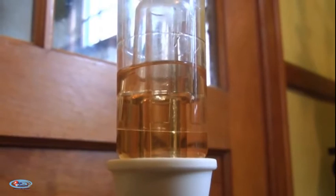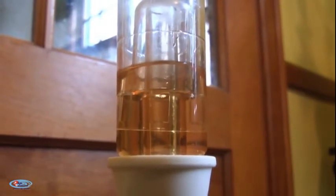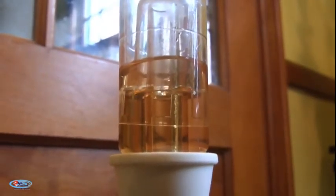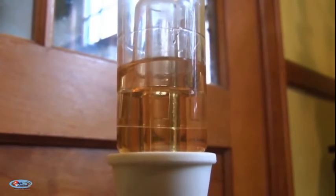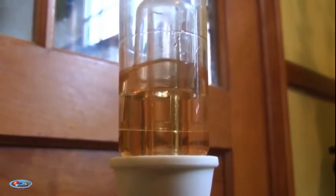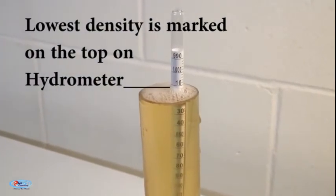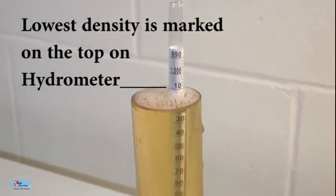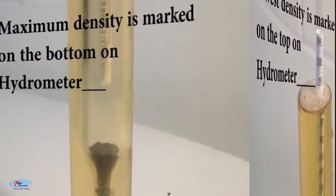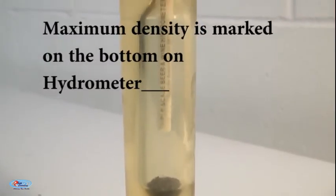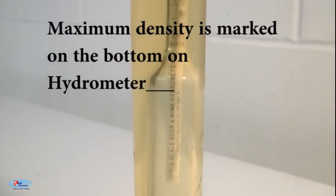Hence, it will sink less in a denser liquid so that it has to displace less volume of the denser liquid whose weight will be equal to the hydrometer. Thus, the lowest density is marked on the top of the stem of a hydrometer and the maximum density is marked at the bottom of the graduated stem.